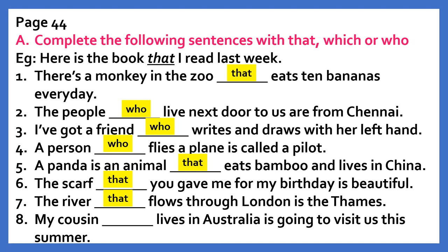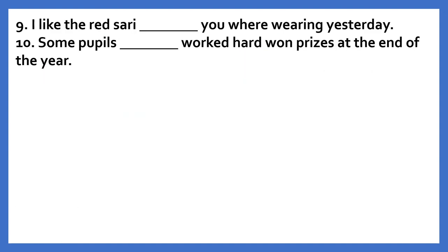Eighth: My cousin dash lives in Australia is going to visit us this summer. Answer: who. Ninth: I like the red saree dash you were wearing yesterday. Answer: which. Tenth: Some pupils dash worked hard won prizes at the end of the year. Answer: who. So children, with this we have finished solving the exercises of the lessons — pronouns reflexive, pronouns interrogative and pronouns relative. This was all for now. Thank you and take care.